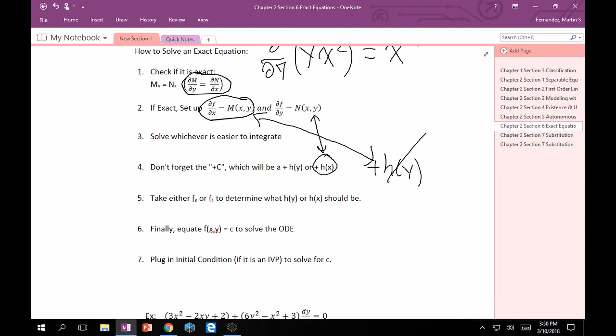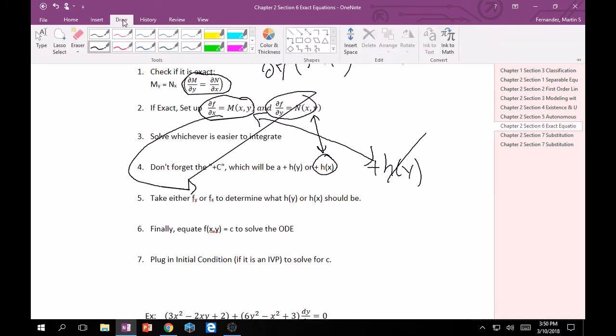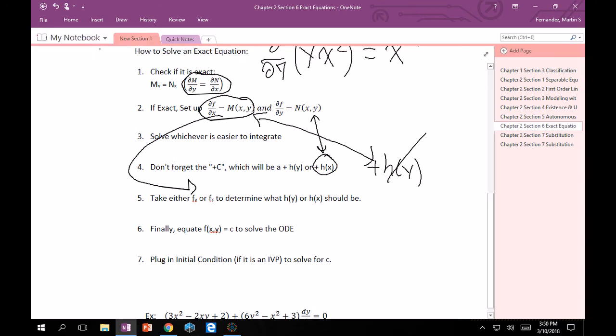Then, after that, depending on which one you did, so here at step five, take either f partial y or f partial x to determine what h of y or h of x should be. Take f of y if you chose this one. Because if you took partial x, then you should theoretically just get m, right? And if you took partial y of this other one, if you took partial y of this one right here, then you should get n again. So, depending on which one you chose, take that partial. And then, then at that point, so once you've got your f, right? And then you take partial fy, assuming you solve this one right here. Then, you should equate it to n x y. And then try to determine what your h of y or h of x is going to be.